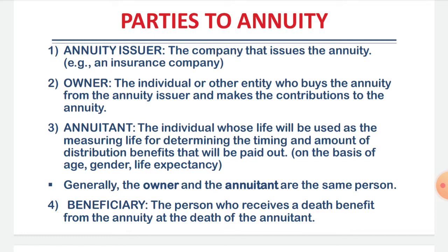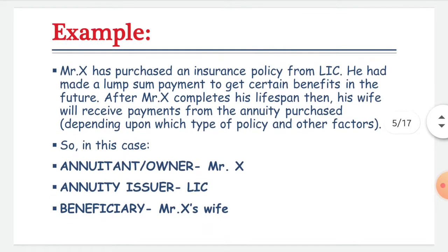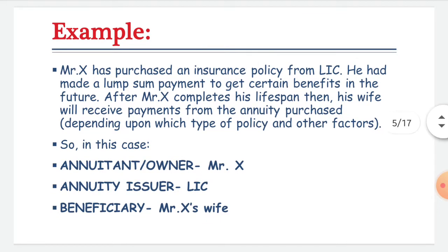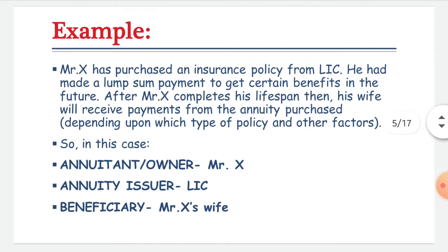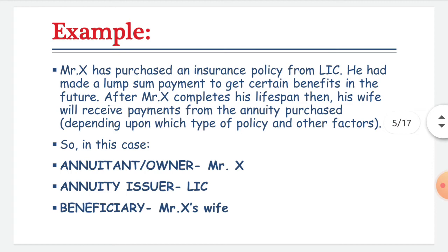The beneficiary is the person who receives a death benefit from the annuity at the death of the annuitant. Here is an example: Mr. X has purchased an insurance policy from LIC and made a lump sum payment to get certain benefits in the future. After Mr. X completes his lifespan, his wife will receive payments from the annuity. So in this case, the annuitant and owner is Mr. X, the annuity issuer is LIC, and the beneficiary is Mr. X's wife.